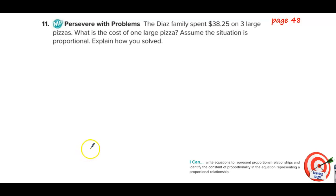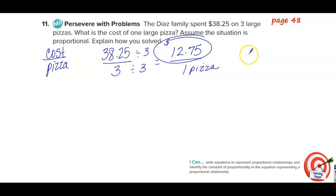Persevere with problems. The Diaz family spent $38.25 on three large pizzas. What's the cost of one pizza? So we're going to do cost over the number of pizzas. Cost per pizza. We know they spent $38.25 on three pizzas. To find out how much they spent on one pizza, we will divide top and bottom by three. $38.25 divided by three is $12.75. So they're spending $12.75 for one pizza. What is the cost of one pizza? $12.75. Assume the situation is proportional and explain how you solved it. Well I put the cost over the pizza and I divided them both by three. That's how I did it.